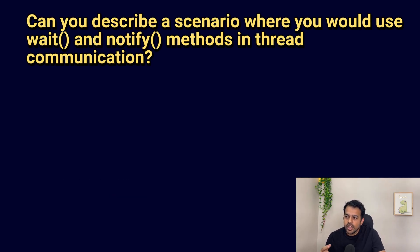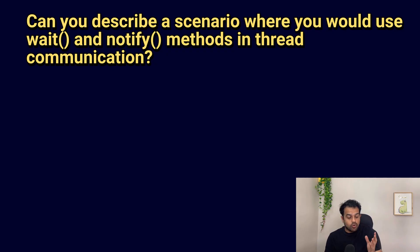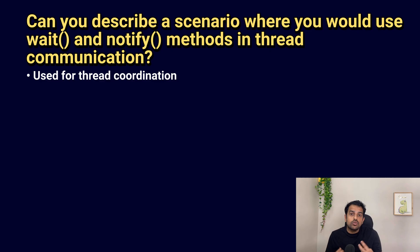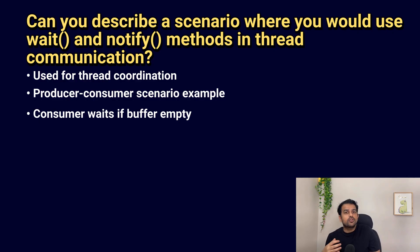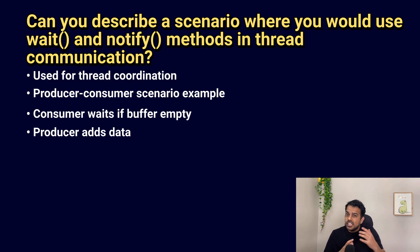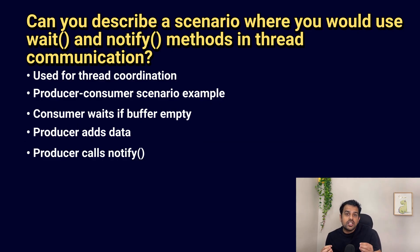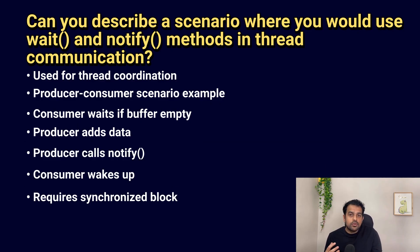The next question is: describe a scenario where you would use wait() and notify() in thread communication. Wait and notify are used when two threads need coordination. For example, one thread is producing data and another is consuming it — if the buffer is empty, the consumer should wait, and when the producer adds new data it calls notify() to wake up the consumer. These methods always require a synchronized block because they act on an intrinsic lock.